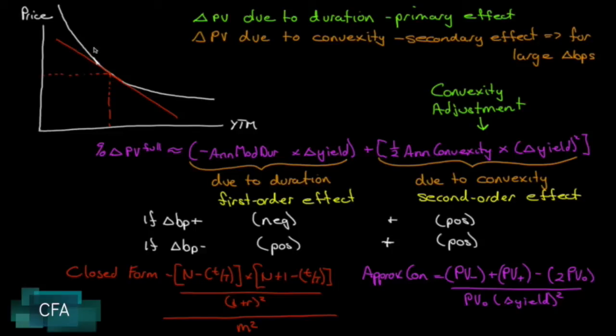We're going to show, as we see in the graph at the top of the screen here, that there is a convex relationship between the price and the yield to maturity of the bond.